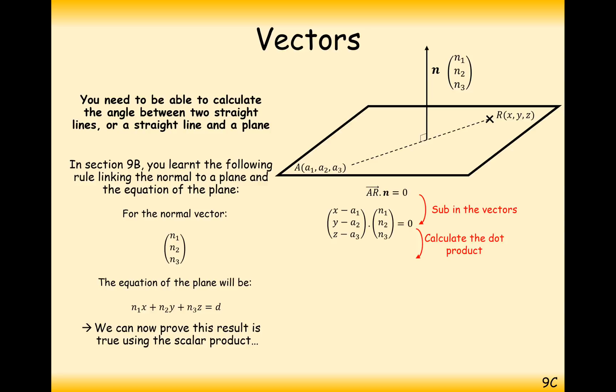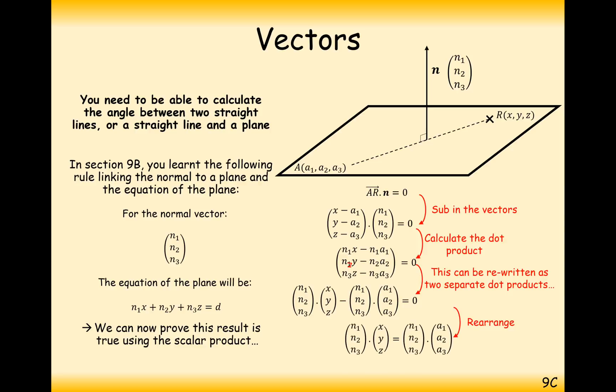And the dot product will equal 0 because there's a right angle there. By definition, it's set up as a right angle, and by the rule of dot product, if your theta angle is 90 degrees, your dot product equals 0. Dot product this all out, so n1 times x minus a1, and dot product it all out. Split up the subtraction here into two separate vectors.